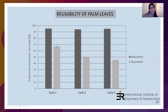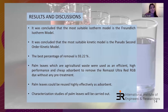Reusability studies of palm leaves indicated that palm leaves are a regenerable substance, maintaining adsorption capacity over three cycles. However, reusability in the absorption of Remazol Ultra Red RGB dye was not fully satisfying due to the nature of the adsorption process. In conclusion, the most suitable isotherm model is the Freundlich model, the most suitable kinetic model is the pseudo-second-order model, the best removal is 93.22%, and palm leaves are efficient, high-performance adsorbents that require no special pretreatment and can be reused effectively. Future work will include characterization studies of palm leaves. Thank you for listening.